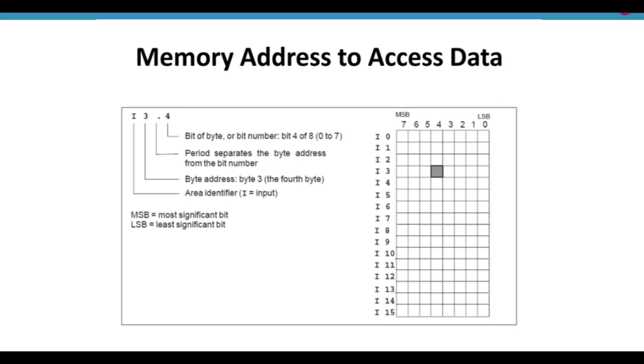For example, this is a memory that has 16 bytes, and each byte has 8 bits. This is the most significant bit 7, and this is the least significant bit.